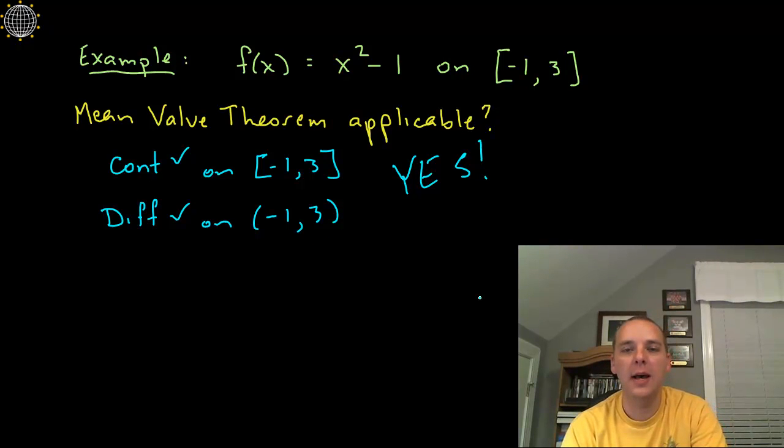Now what you'll typically be asked beyond this is, if it is applicable, if the mean value theorem is applicable, then what was that C that we were guaranteed? There was supposed to be somebody whose derivative at C matched the average slope on this interval.